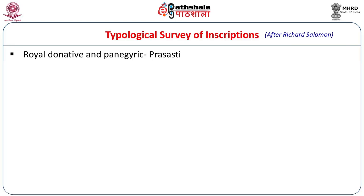These are the Ashokan inscriptions and we will discuss them separately. The second category are the land grants. These are donation records of lands, mainly on copper plate charters. Though initially they were made on palm leaves and birch barks, those specimens have not survived. We also get certain caves where there are allusions to land donations, which will be discussed in detail later.